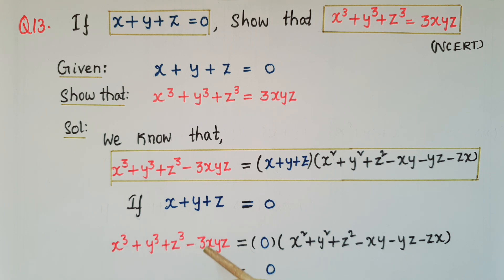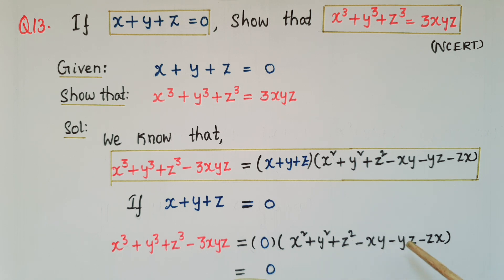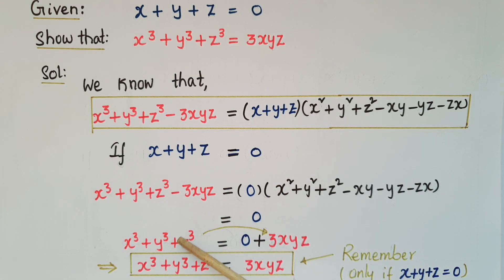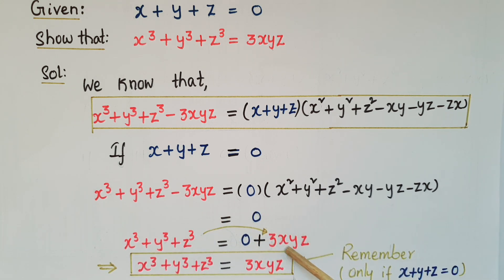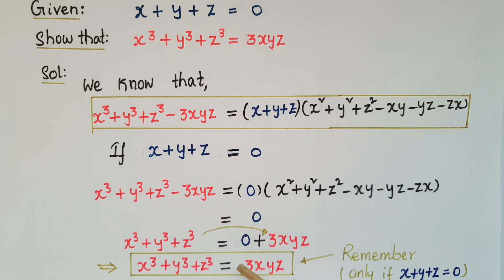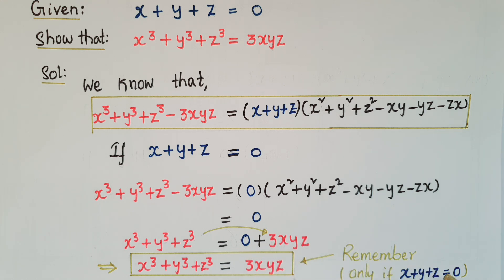So, x cube plus y cube plus z cube minus 3xyz is equal to 0 multiplied by (x square plus y square plus z square minus xy minus yz minus zx), which equals 0. Therefore, x cube plus y cube plus z cube is equal to 3xyz. We can use this to add three cube numbers when x plus y plus z is equal to 0.